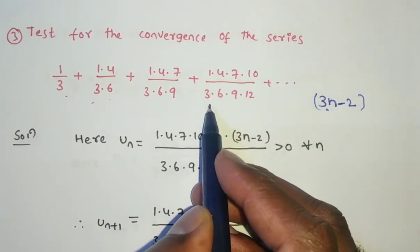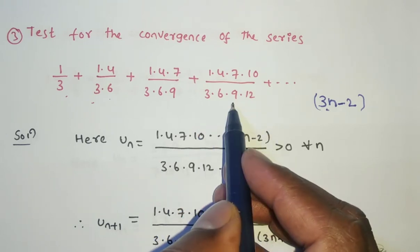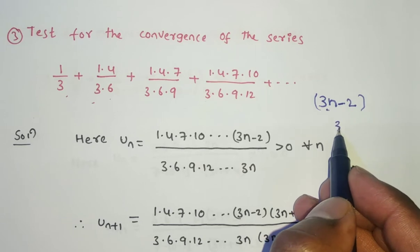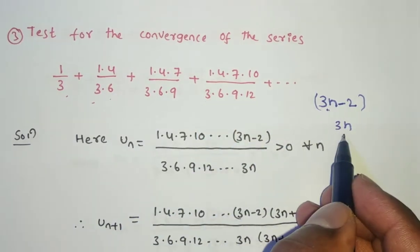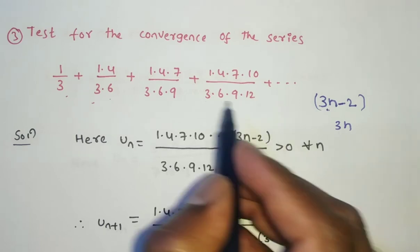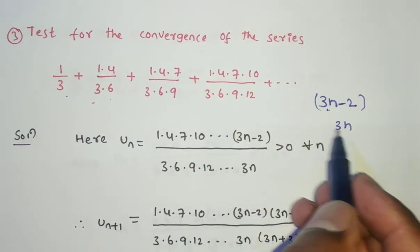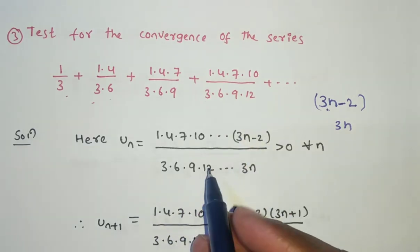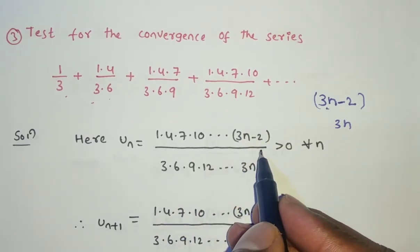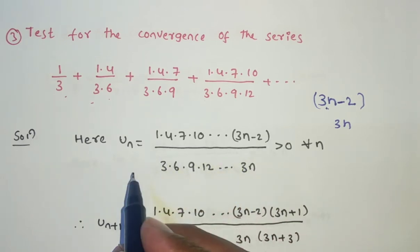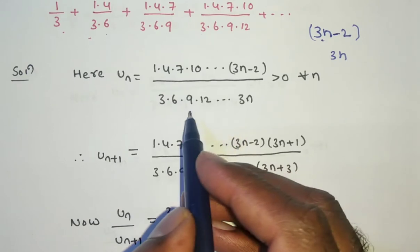Next, in the denominator: 3×6×9×12 — common difference is 3. So write 3n. Putting n=1 gives 3, n=2 gives 6, n=3 gives 9. All satisfied. So the nth term is established, and in the repeated series form we also write the previous n−1 terms.